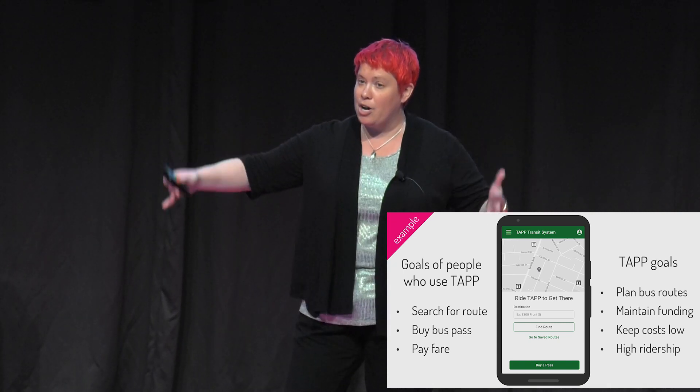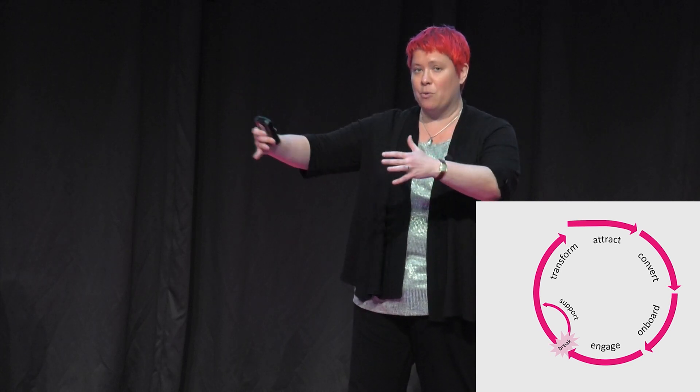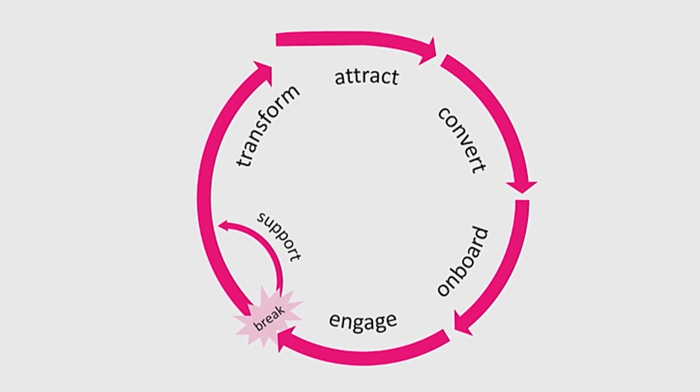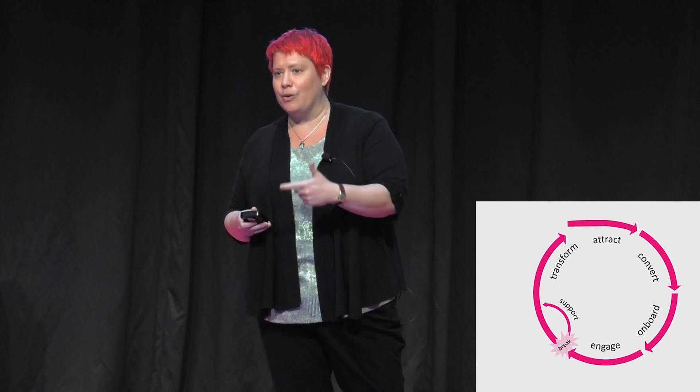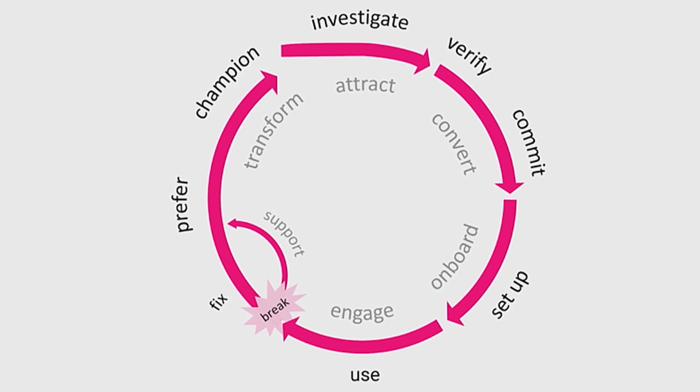This is an example where we actually know our goals. For any organization, they're following this cycle: attract people, convert those who are now aware of it into people who actually download the app or ride the bus, onboard those people into the experience, engage them, support when things break, and transform them into repeat customers, enthusiasts, or people who bring their family along. What the people are trying to do is different than the organization — but related.